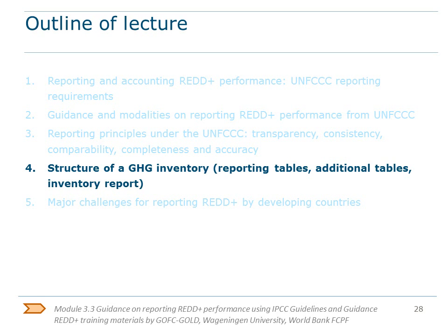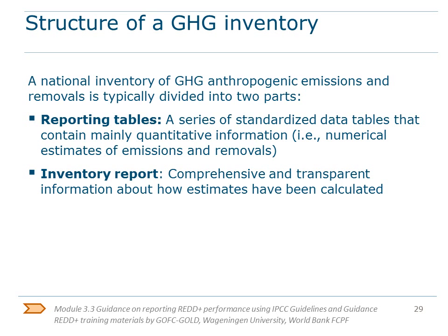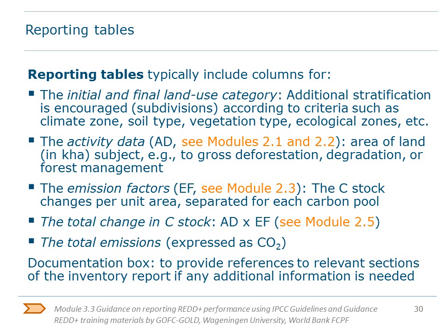We now move to section 4, which is the structure of a greenhouse gas inventory, including reporting tables and the national inventory report. A national inventory of greenhouse gas emissions and removals is typically divided in two parts. One is reporting tables — a series of standardized tables, so-called CRF tables in the case of a greenhouse gas inventory, that contain mainly quantitative information, so numerical estimates of emissions and removals. Then there is an inventory report, which is a comprehensive and transparent information document about how estimates are calculated, including methods and assumptions. Reporting tables typically include columns for the initial and final land use category, and additional stratification is encouraged. Stratification means subdivision according to criteria such as climatic zones, soil type, vegetation types, and so on. This is left to the country, but the greater the disaggregation, the more transparent is the information.